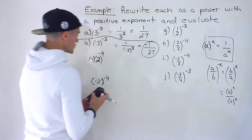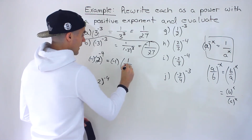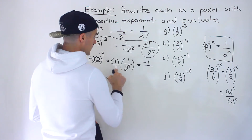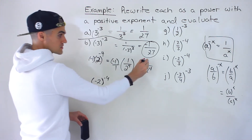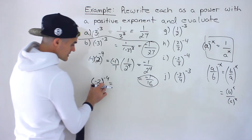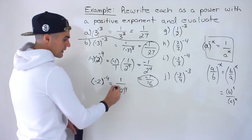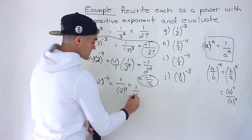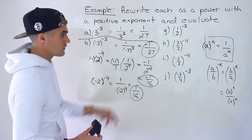For negative 2 to the negative 4 (no brackets): keep the negative 1 on the side, and 2 to the negative 4 becomes 1 over 2 to the positive 4. The negative 1 stays in the numerator, giving negative 1 over 16. For negative 2 in brackets to the negative 4: the entire negative 2 comes down to the denominator, so it's 1 over negative 2 to the positive 4. A negative value to an even exponent is always positive, so this gives 1 over positive 16. One answer is negative, the other is positive.